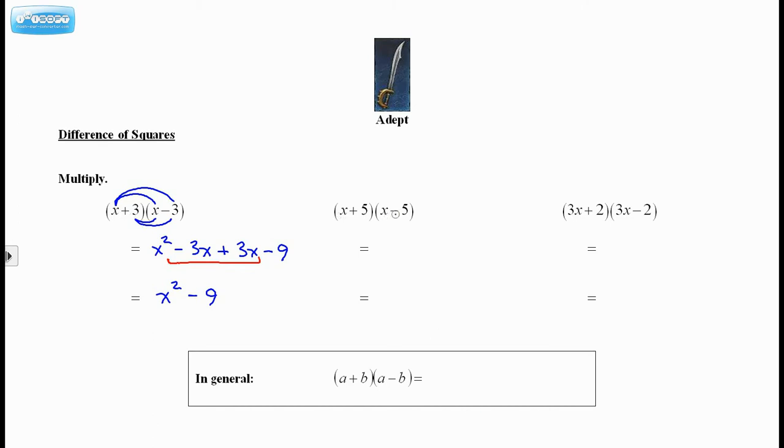I have x plus 5 times x minus 5. If I multiply it out, I get a minus 5x plus 5x in the middle, minus 25. So those cancel, and again, I'm left with just a difference of two squares, x squared and 25. Next one, same thing. I get 9x squared minus 6x plus 6x minus 4. The 6x's cancel, and I'm left with 9x squared minus 4.